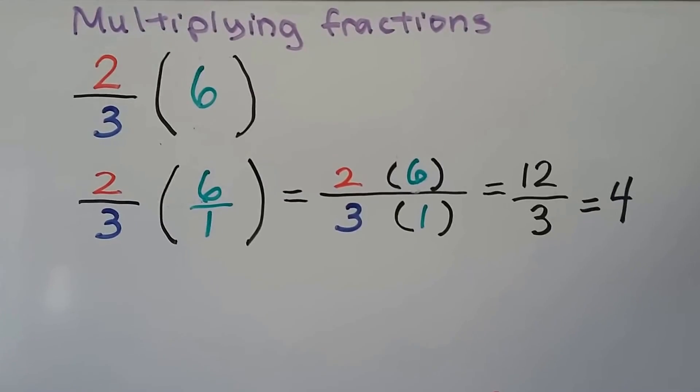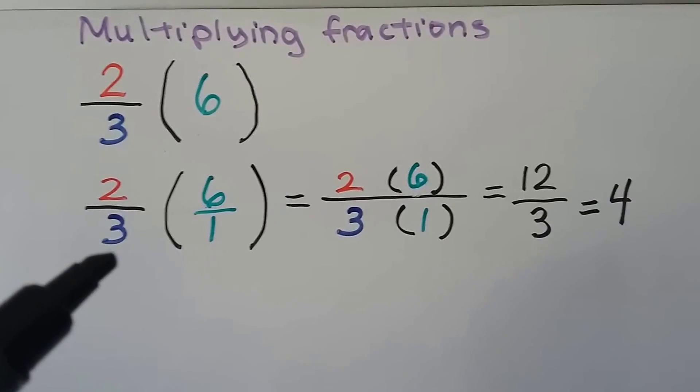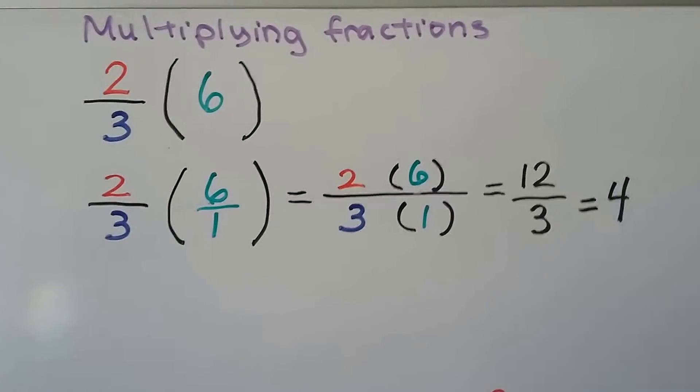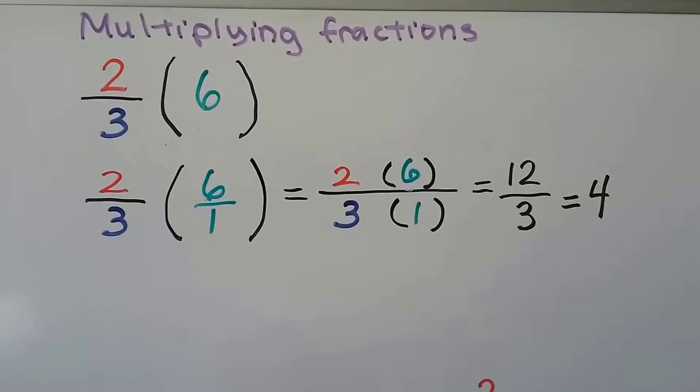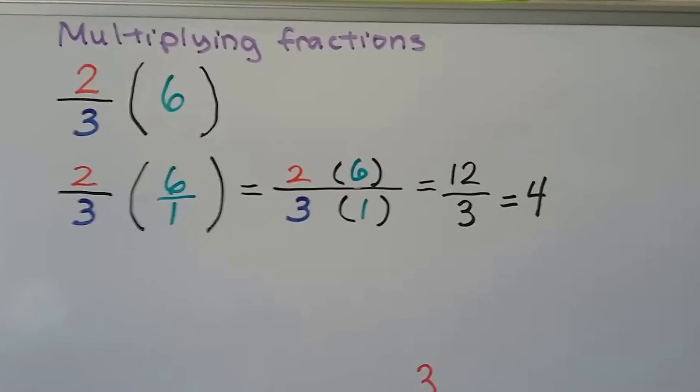We can simplify the problem by cross-canceling with the greatest common factor for the 3 and the 6. We'll get into that in a second. I just want you to remember that you can go straight across numerators, straight across denominators for now.